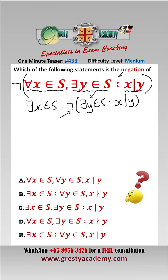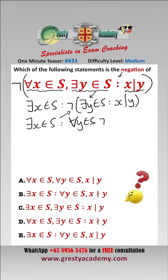The negation of 'there exists a y' is 'for all y.' So we have: there exists an x contained in S such that for all y contained in S, it is not the case that x divides y.